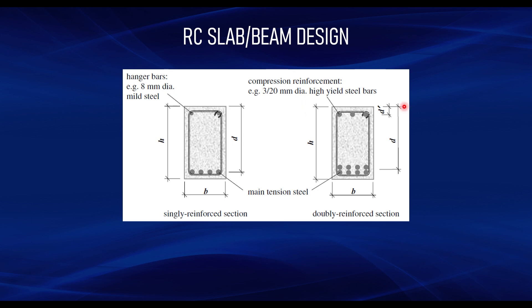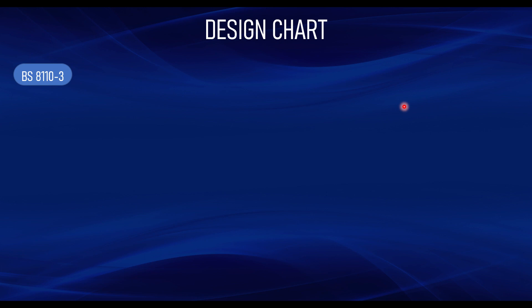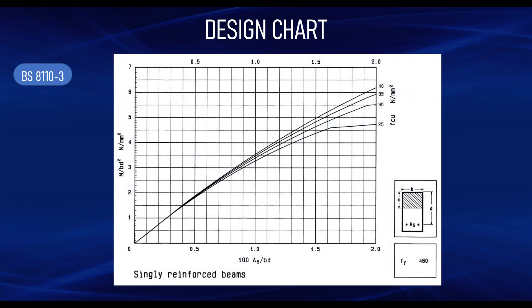This design chart is provided in BS 8110 Part 3. In this video we are looking at the singly reinforced section; in subsequent videos I'll cover the doubly reinforced section as well. This is a typical design chart for a singly reinforced section for beams. The chart is divided based on the characteristic strength of steel — there is a chart for fy = 250 and a chart for fy = 460. The example shown here is for fy = 460.